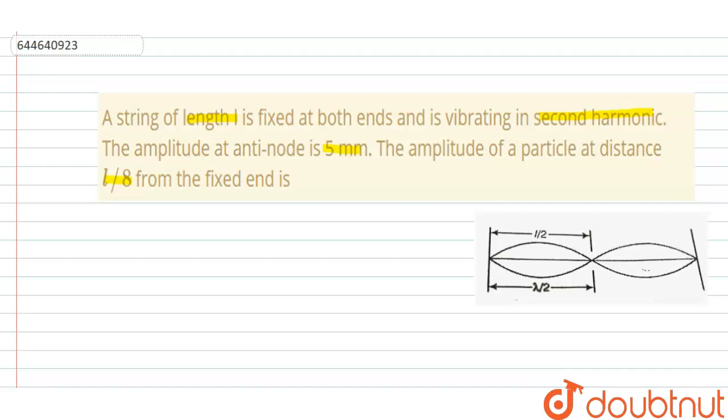So this is our string whose length is equal to L, and this is the antinode. So this whole length is equal to L.